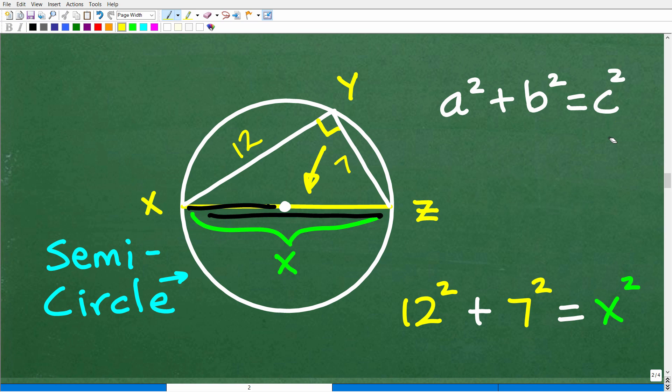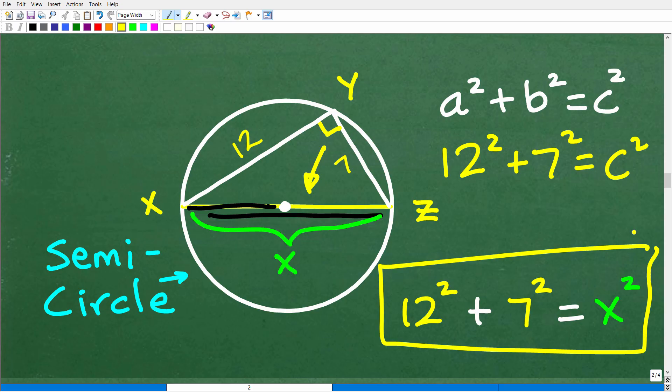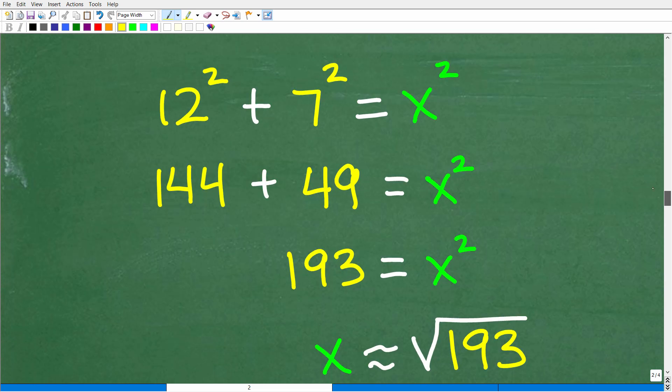Let's plug in the numbers. 12 squared plus 7 squared equals X squared. Here is the equation that we need to solve. Let's do that number crunching. 12 squared is 12 times 12, which is 144. 7 squared is 7 times 7, which is 49. 144 plus 49 is 193, and that equals X squared.